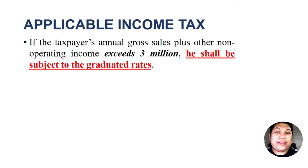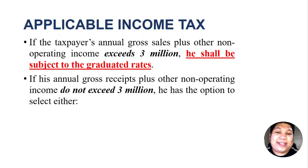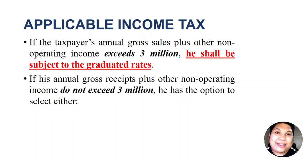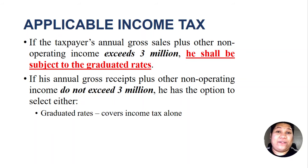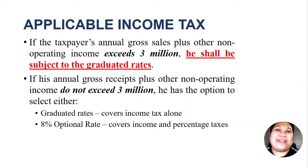However, if your annual gross sales plus other non-operating incomes which are not subject to final tax do not exceed ₱3 million, you have the option to select either the graduated rates — which covers income tax alone — or the 8% optional rate, which covers both income tax and percentage tax.